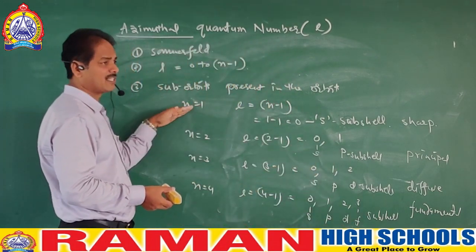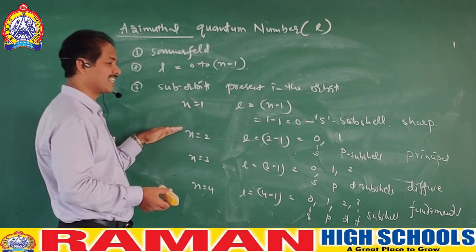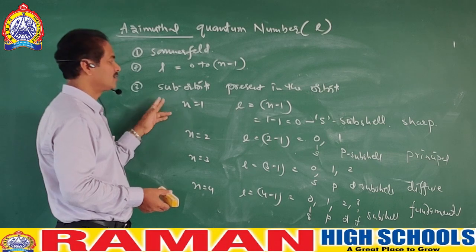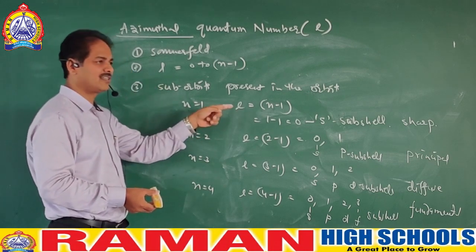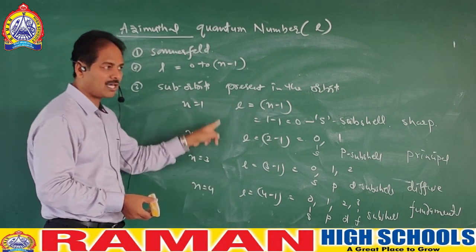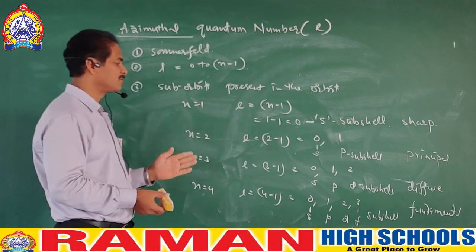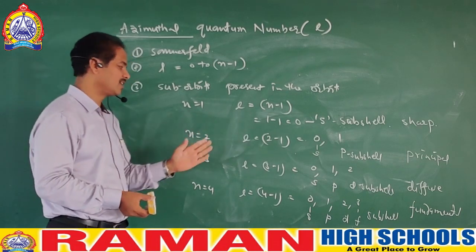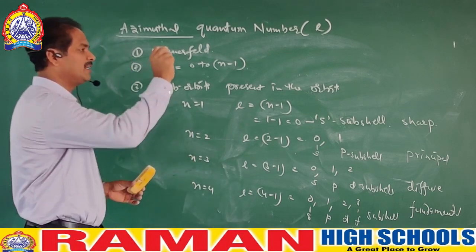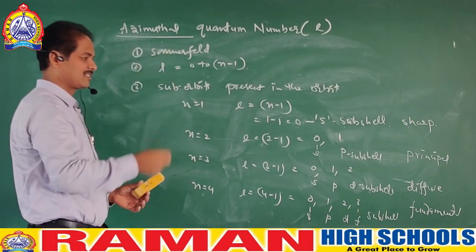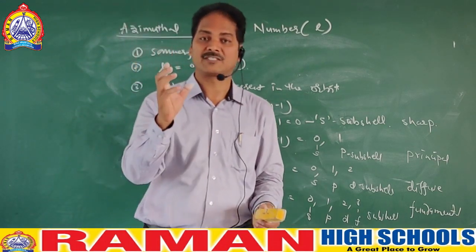P sub-shell is not possible in the first orbit. D sub-shell is not possible in the second orbit. The common sub-shell in all orbits is S. S sub-shell is present from the first orbit. P sub-shell starts only from the second orbit. D sub-shell starts from the third orbit. F sub-shell starts from the fourth orbit. This is what the azimuthal quantum number tells us about orbits and sub-orbits.